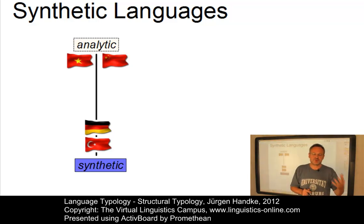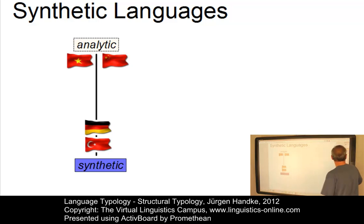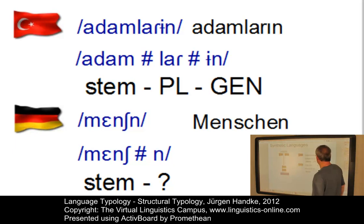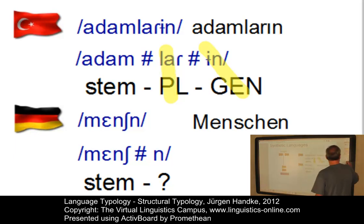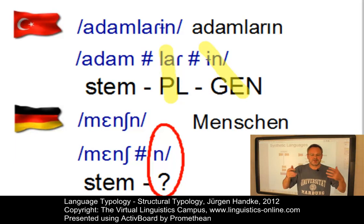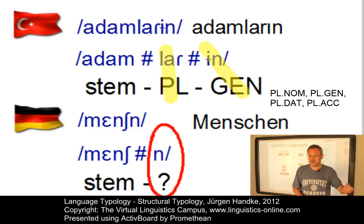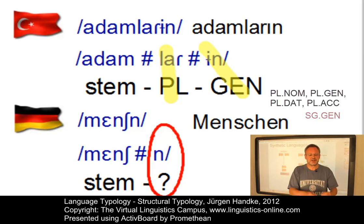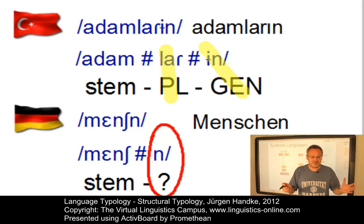But what is the difference between these two languages? Looking at the function of the morphs in both German and Turkish: in Turkish, 'adamların' can be clearly subdivided, and we can associate one particular function with each relevant morph. In German, this is relatively difficult — the final suffix can denote the plural nominative, plural genitive, plural dative, plural accusative, and even the genitive singular. So the difference is that the bound morphs in Turkish are functionally unambiguous, whereas in German the bound morphs exhibit several grammatical functions.